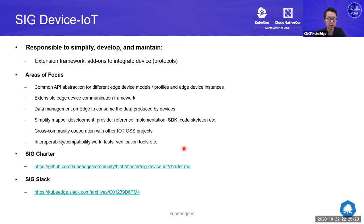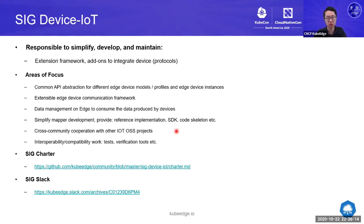Another focus is data management, since devices produce a lot of time-series data and it's expensive to send all of it to the central cloud — so data can be persisted on the edge. For mapper development, the SIG will simplify and improve the mapper design and provide reference implementations, SDKs, or code skeletons. The SIG will also work on cross-community cooperation, integrating with other IoT projects and verifying interoperability and compatibility with other projects and devices.